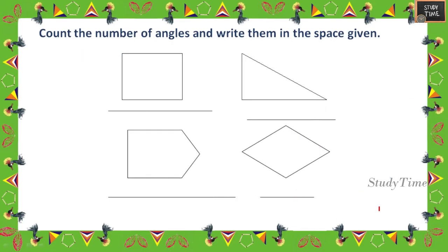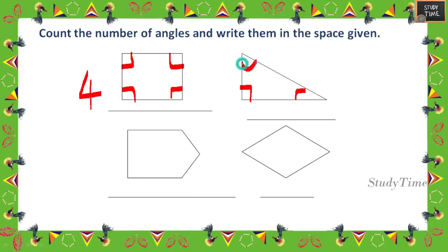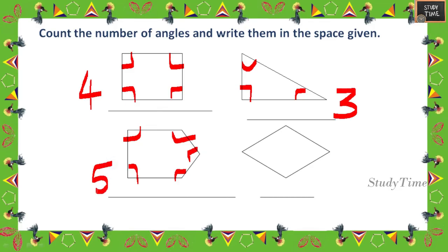Next, count the number of angles in the shapes. A square has four angles. A triangle has three angles. A pentagon has five angles. A diamond has four angles.